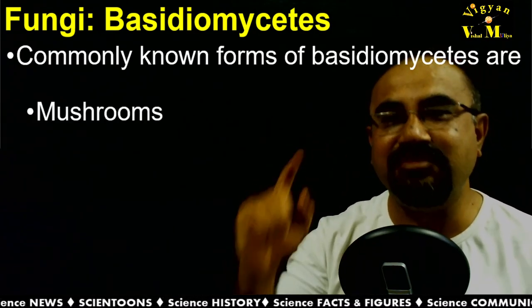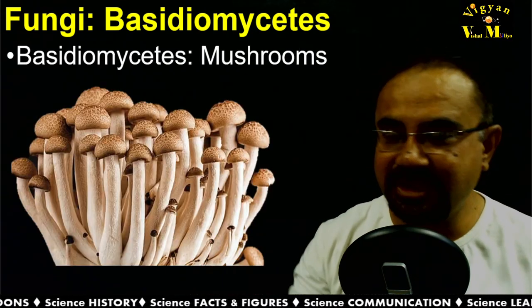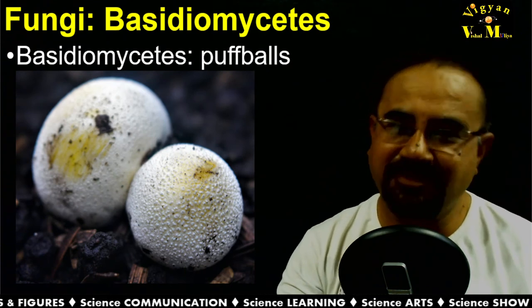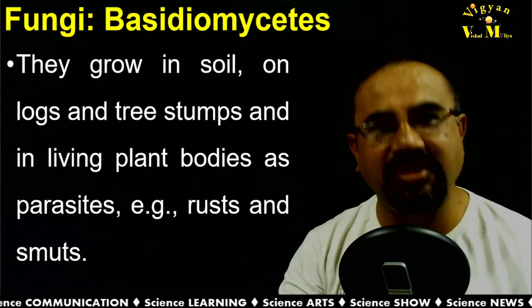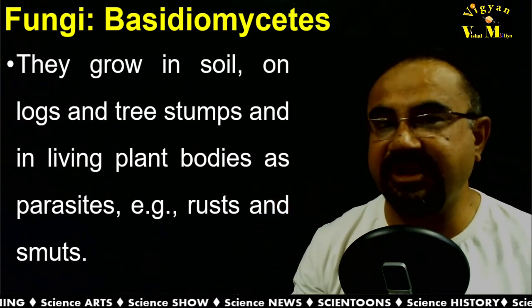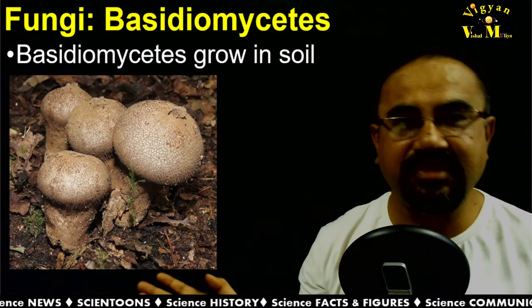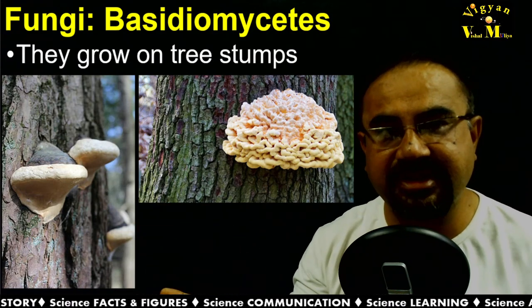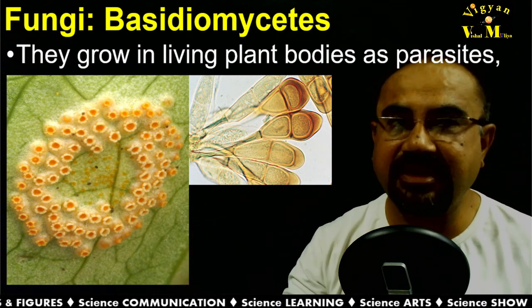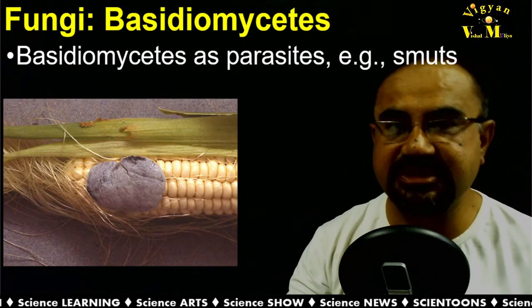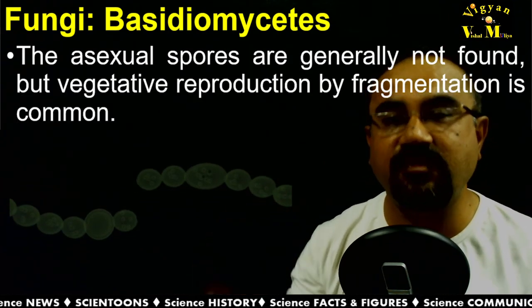Basidiomycetes are commonly seen as mushrooms, bracket fungi, or puffballs. They grow in soil, on logs and tree stumps, or in living plant bodies as parasites — exemplified by rust and smut-causing fungi. The mycelium is branched and septate. Asexual spores are generally not found, but vegetative reproduction occurs by fragmentation.